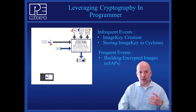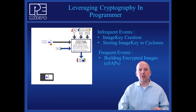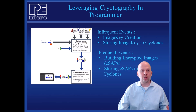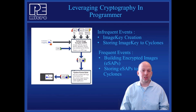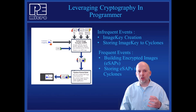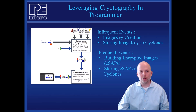You essentially say, I want to cryptographically secure this image with this image key. What comes out is an ESAP image — an encrypted standalone programming image. That image file can at any time be loaded into Cyclones which have the key. If the Cyclone doesn't have the key, it'll reject it and tell you what key it's missing. And second, it doesn't even know how to decrypt the image. So this limits your encrypted SAP images to just the Cyclones that you've provisioned with it.